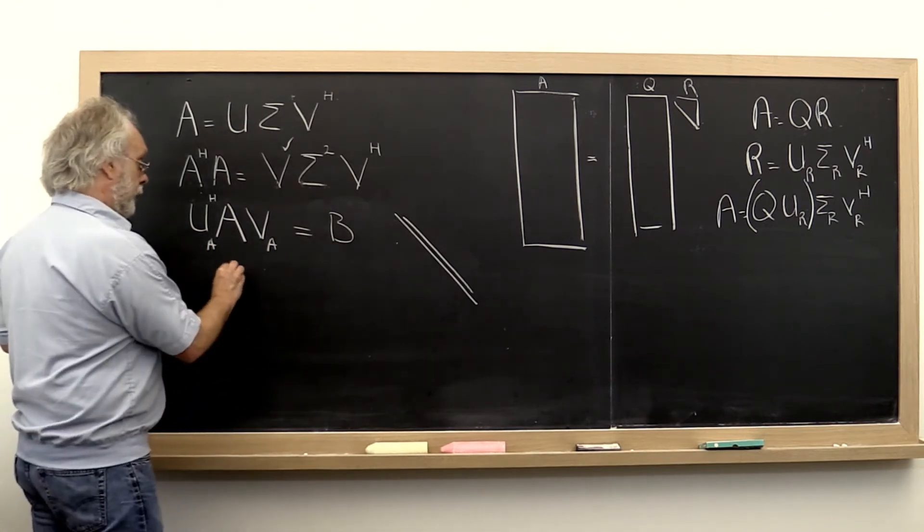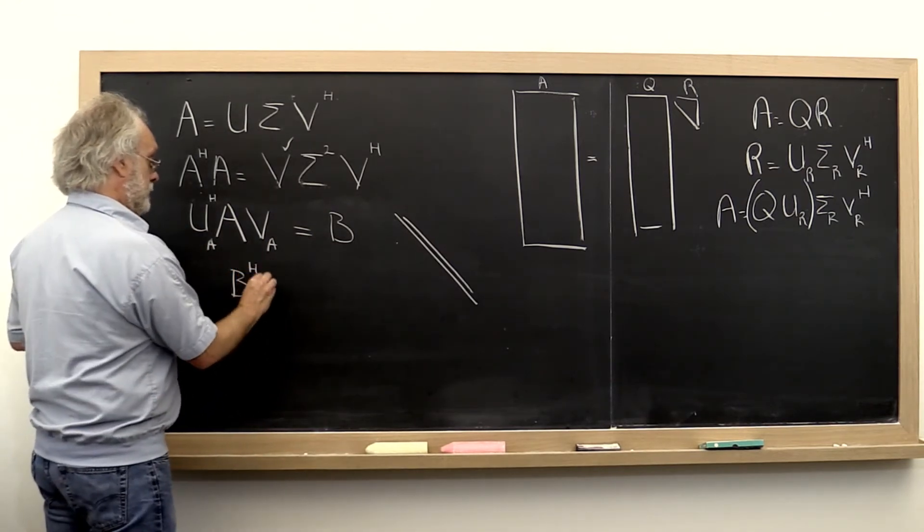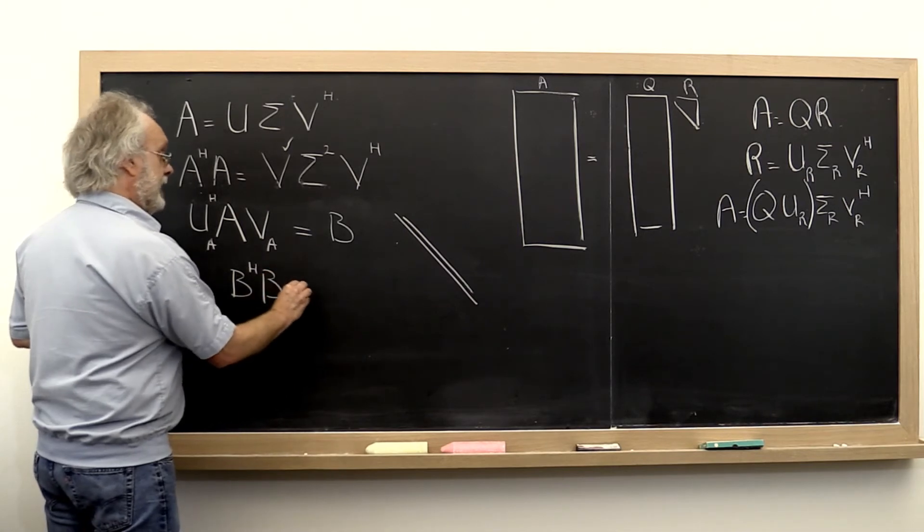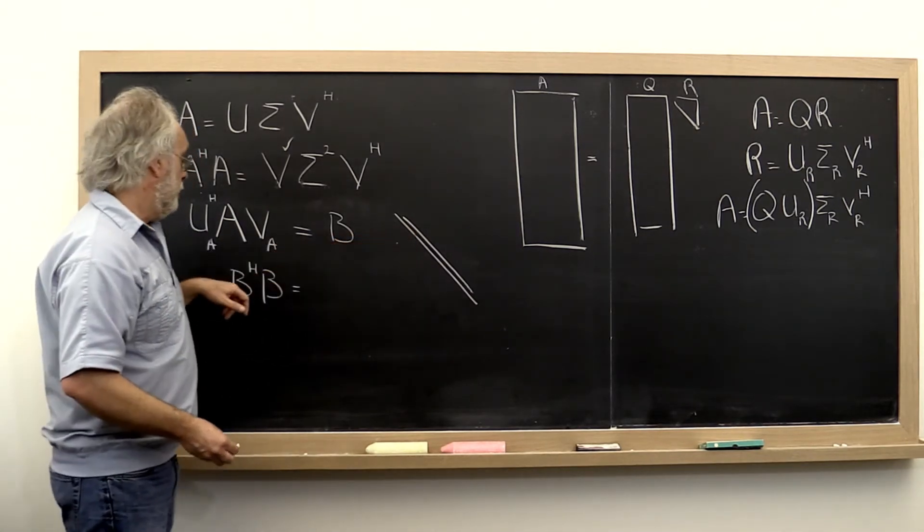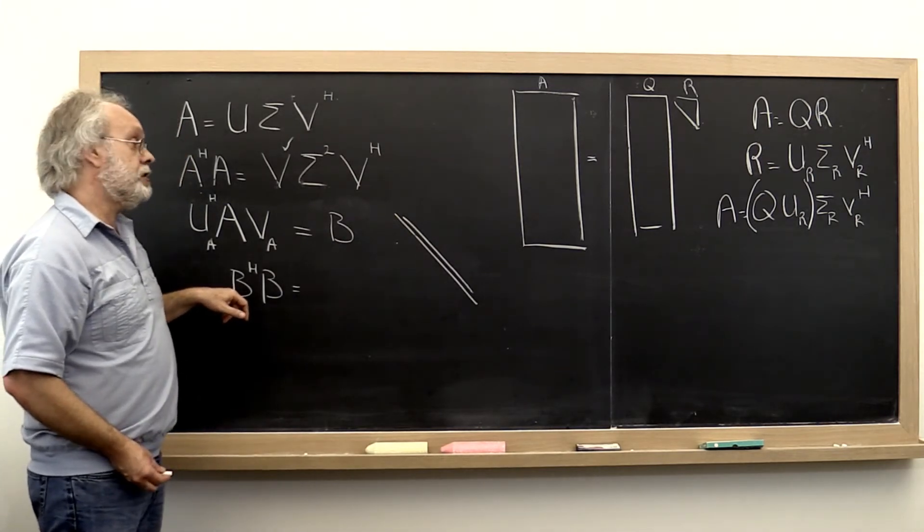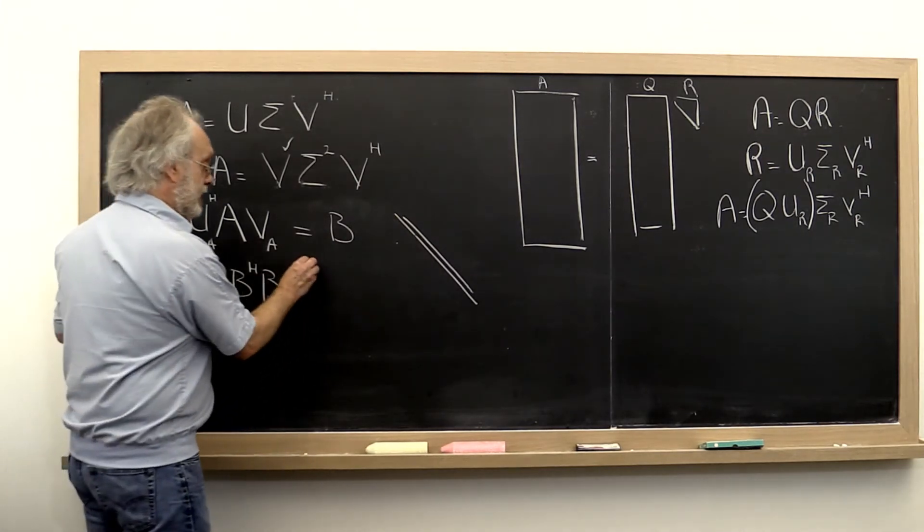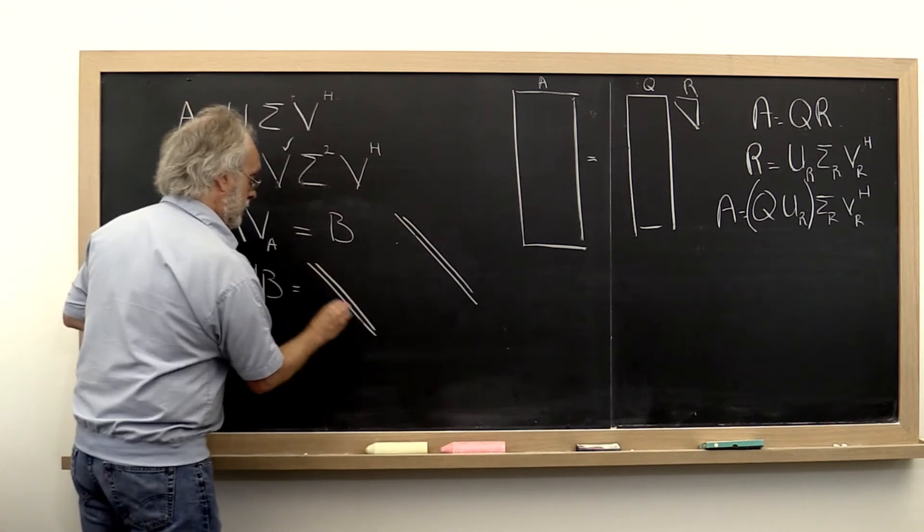Well, we could form B Hermitian transpose times B. And notice that if you multiply a bidiagonal matrix from the left by its Hermitian transpose, then you get a tridiagonal matrix.